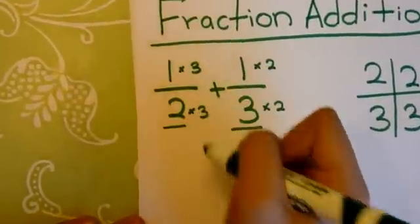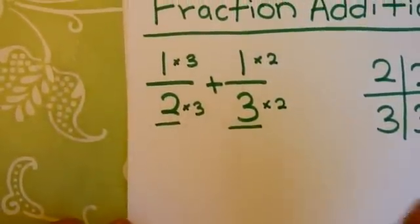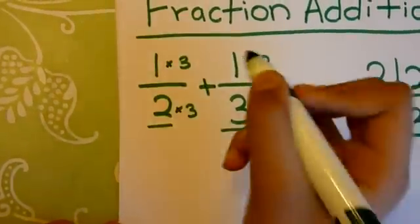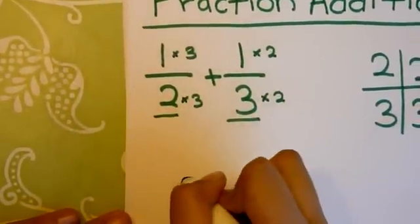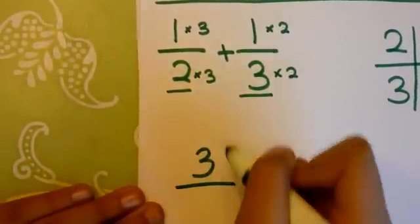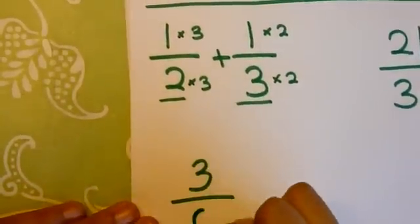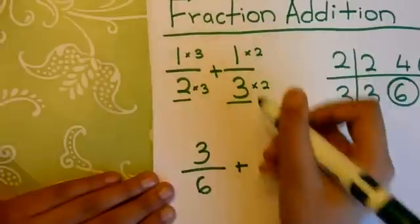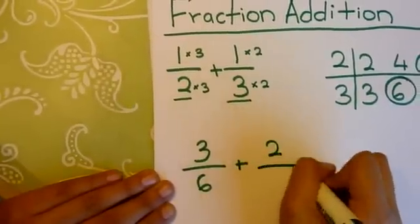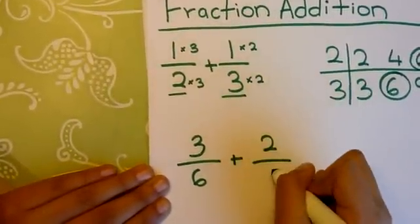Now we'll find our problem. 3 times 1 is 3. 3 times 2 is 6. 2 times 1 is 2, and 2 times 3 is 6.